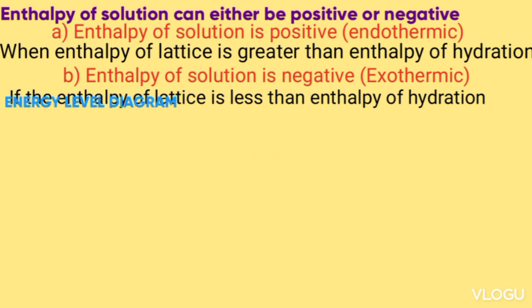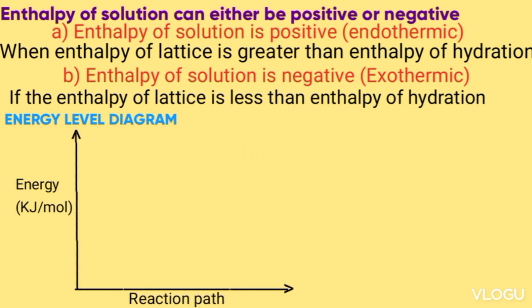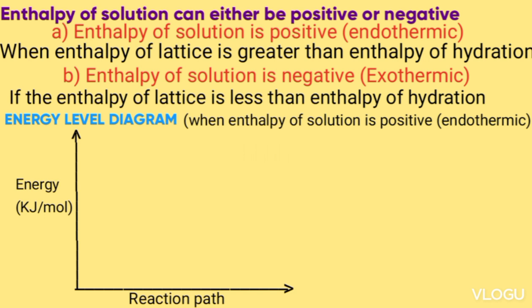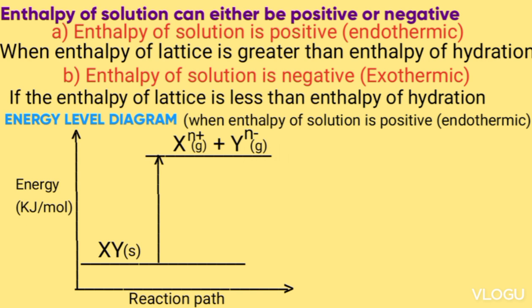Next we look at how to draw energy level diagrams when enthalpy of solution is either negative or positive, using XY solid as an example. The first energy level diagram is when enthalpy of solution is positive. We start by drawing the lattice energy, which is positive, so the arrow goes up. Starting from XY solid, the arrow goes up because it is endothermic, forming X⁺ (gas) plus Y⁻ (gas).